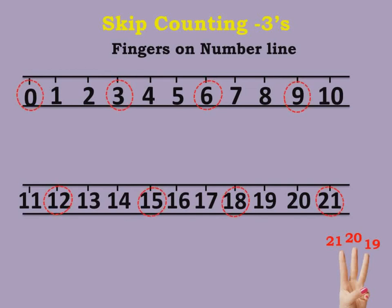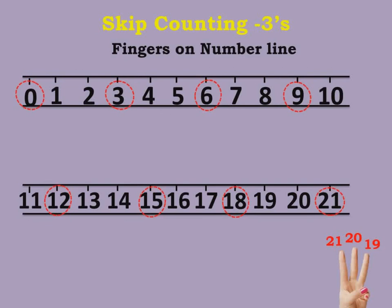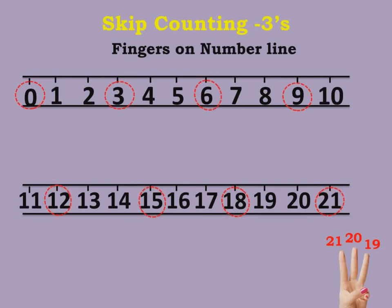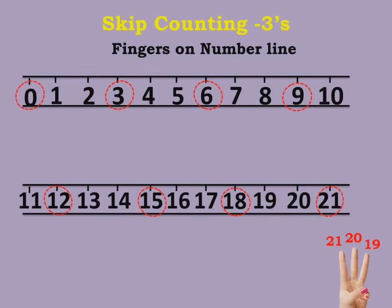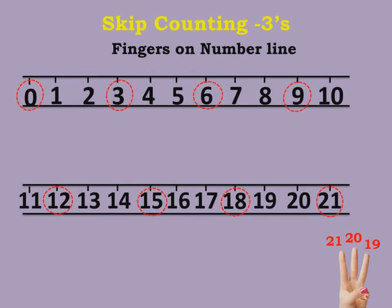So children, when you do Skip Counting by Threes, the numbers we get are: 3, 6, 9, 12, 15, 18, 21.